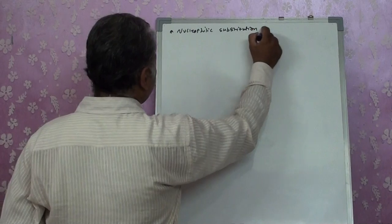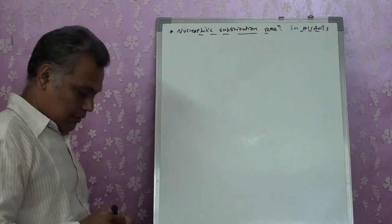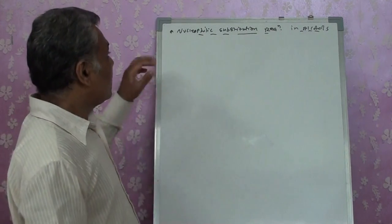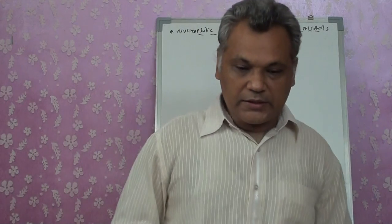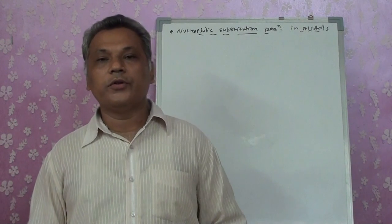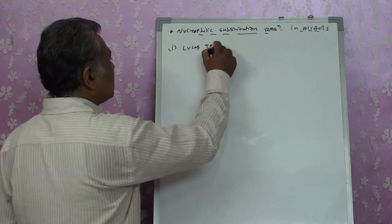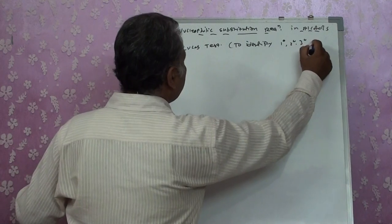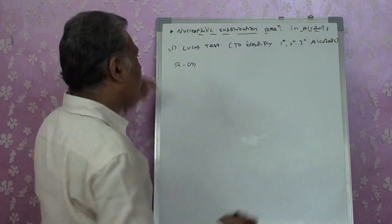Now we move to nucleophilic substitution reactions in alcohols. We studied electrophilic substitution reactions; now we study nucleophilic substitution reactions. The first one is the Lucas test — used to identify primary, secondary, and tertiary alcohols. This is a revision from the alkyl halides chapter on preparation of halogens from alcohols.